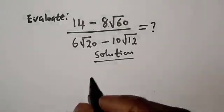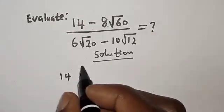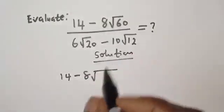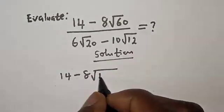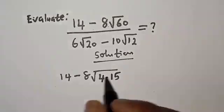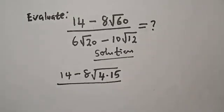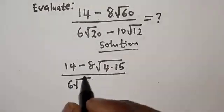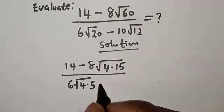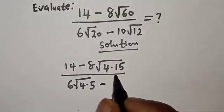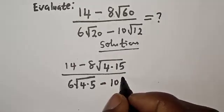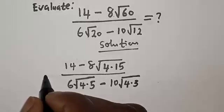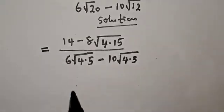We have 14 minus 8 root 60, which is 4 multiplied by 15, over 6 root 20, which is 4 multiplied by 5, minus 10 root 12, which is 4 multiplied by 3.